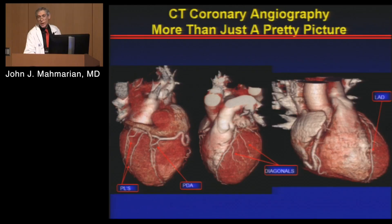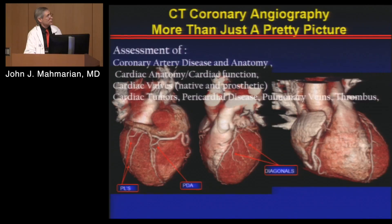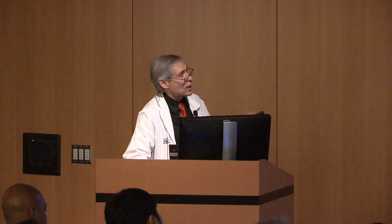In conclusion, there are many ways to use CT: assessing coronary disease and anatomy, coronary anatomy and cardiac function, cardiac valves both native and prosthetic, tumors, pericardial disease, pulmonary veins, thrombus, and the thoracic aorta and its branches for aneurysms and dissections. Both nuclear cardiology and CT are not only exclusive but also complementary in many regards. I hope this gave you some flavor for how we utilize these techniques in clinical practice. Thank you very much.